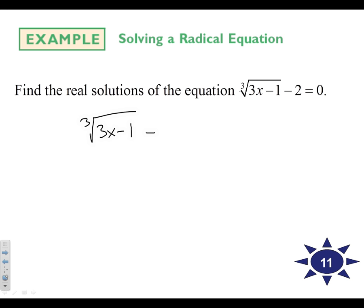So the cube root of 3x minus 1, let's move the 2 to the other side. So if you have the radical all by itself, let's cancel out the root. In this case, we're going to cube, and if we do it to one side, we've got to do it to the other side. So we're going to be left with 3x minus 1 on the left. We're going to be left with 8 on the right. If we add 1, we'll get 3x equals 9, x equals 3. That's your answer.